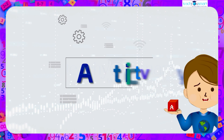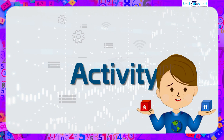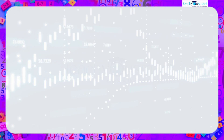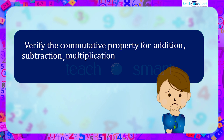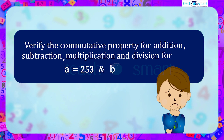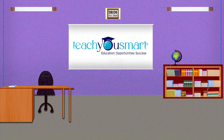Before winding up, let's check how much you understood by doing an activity. Verify the commutative property for addition, subtraction, multiplication, and division where a equals 253 and b equals 759. That's all for now — see you all in the next class.